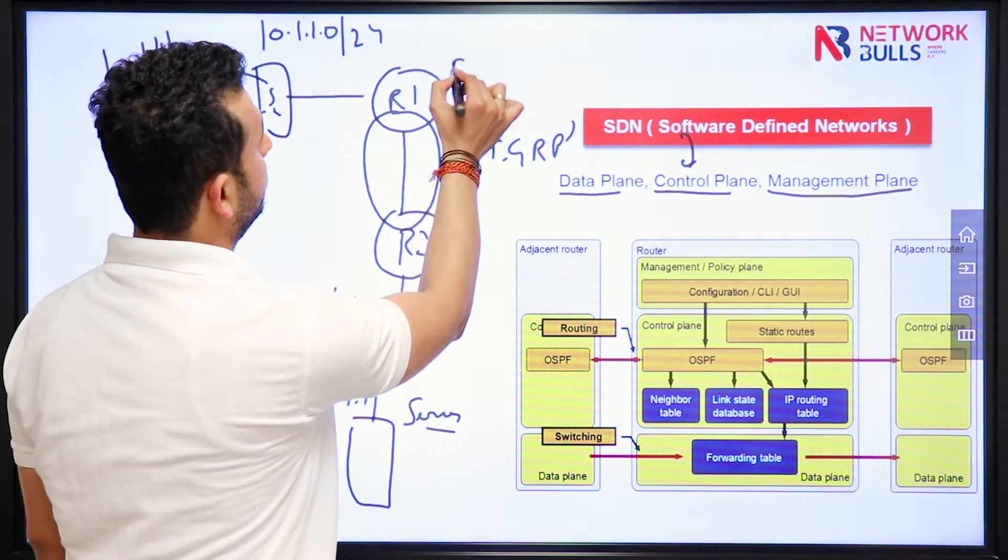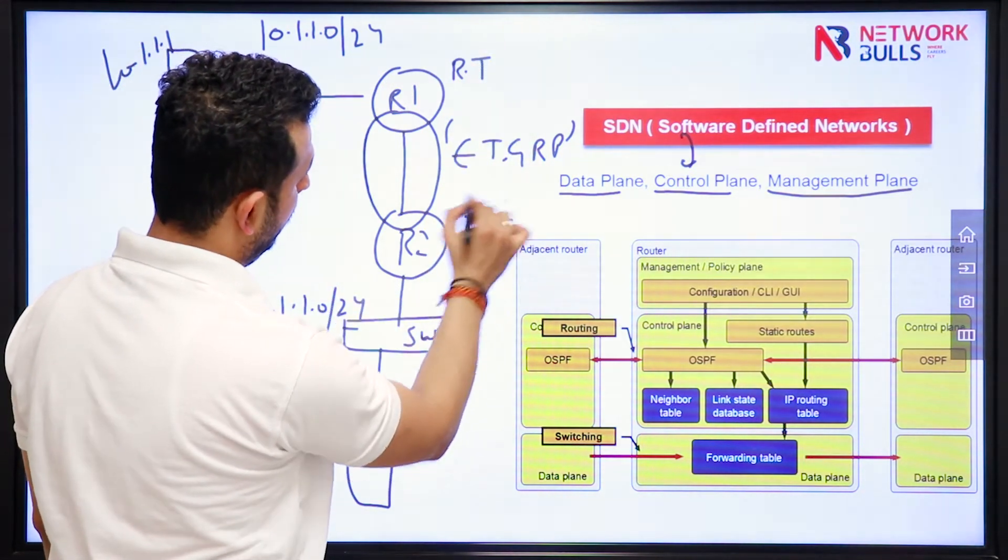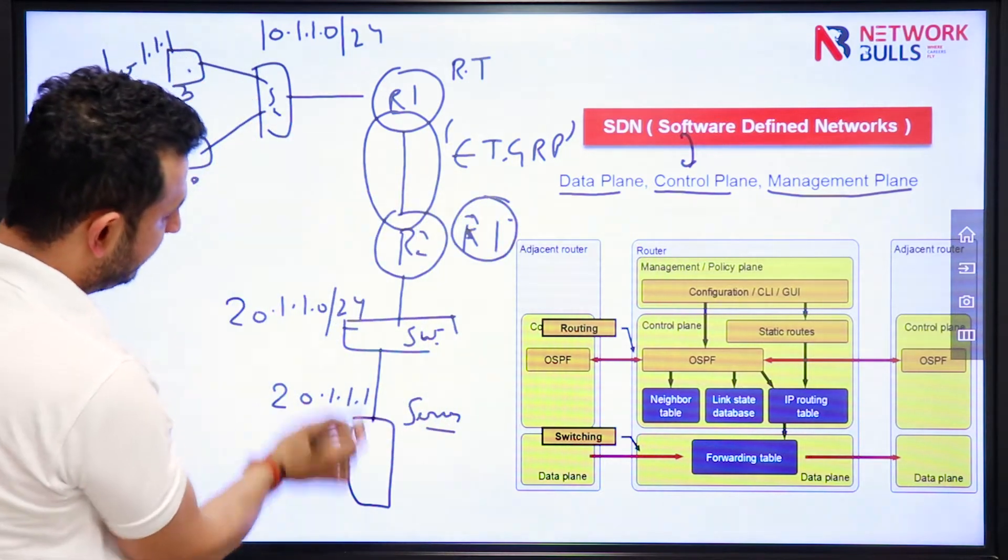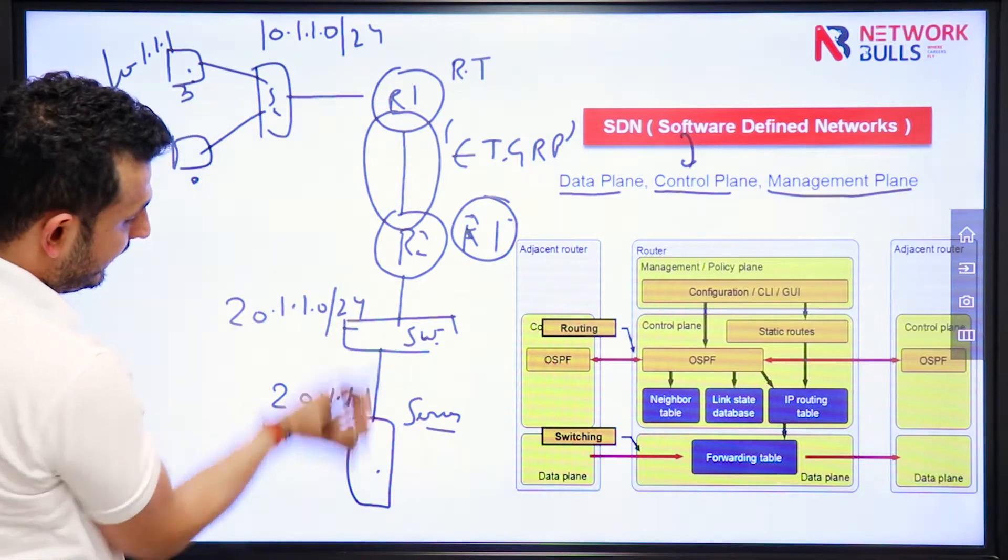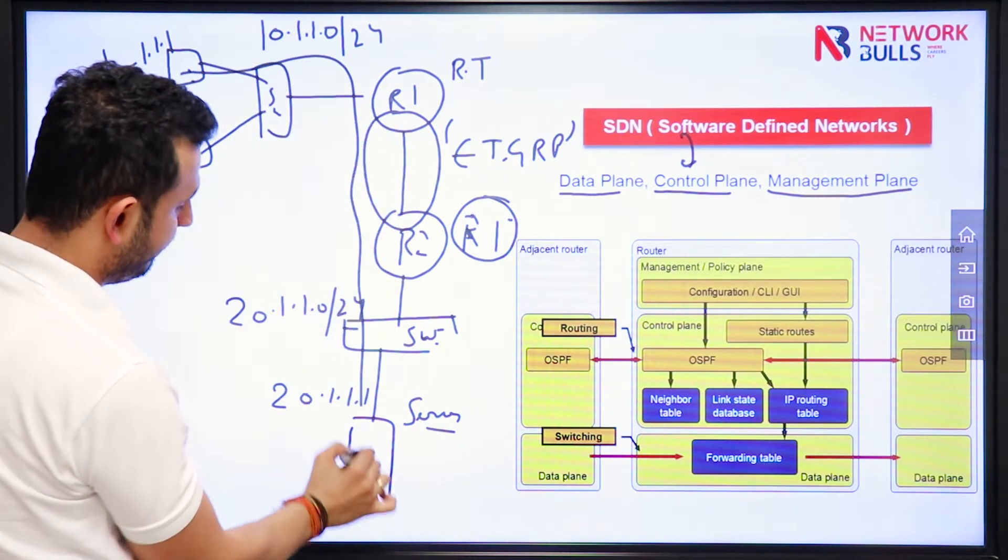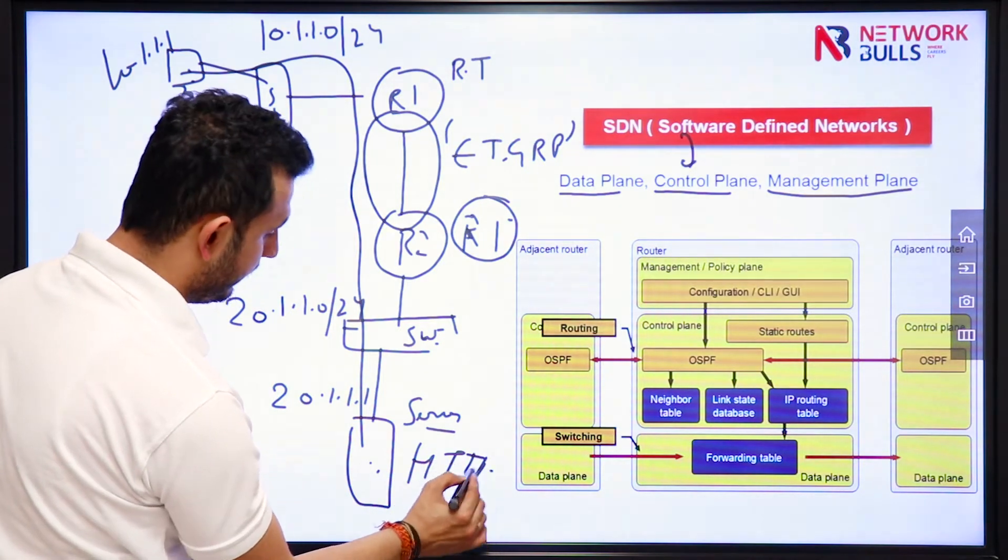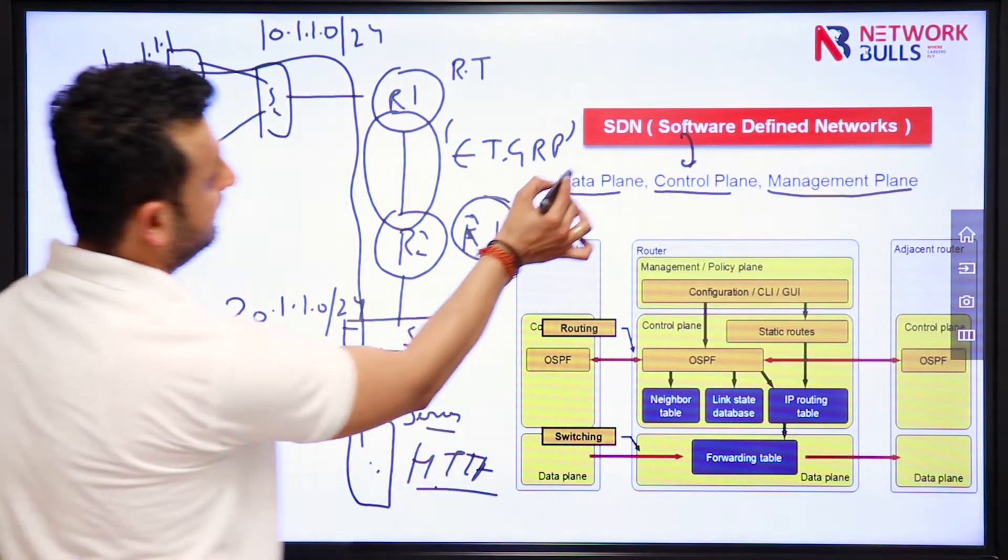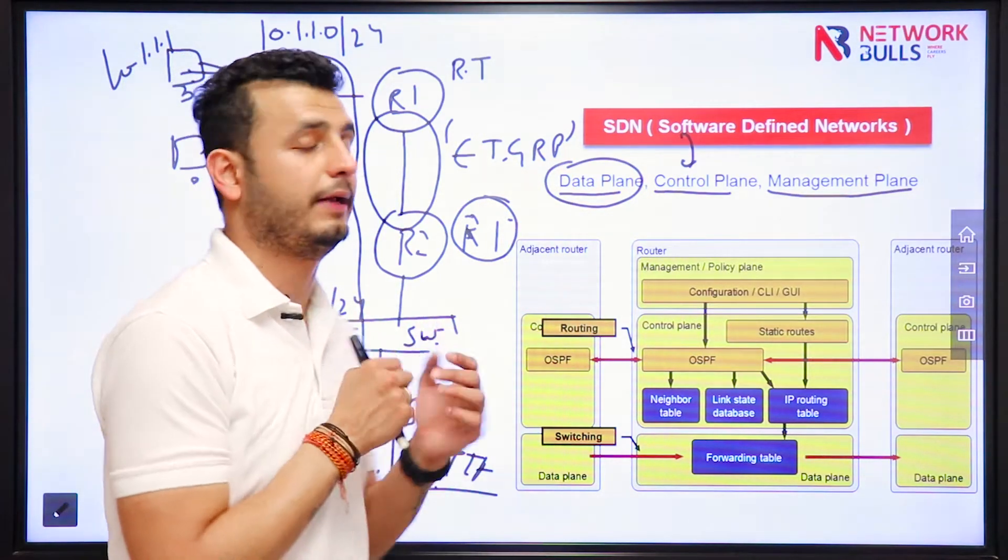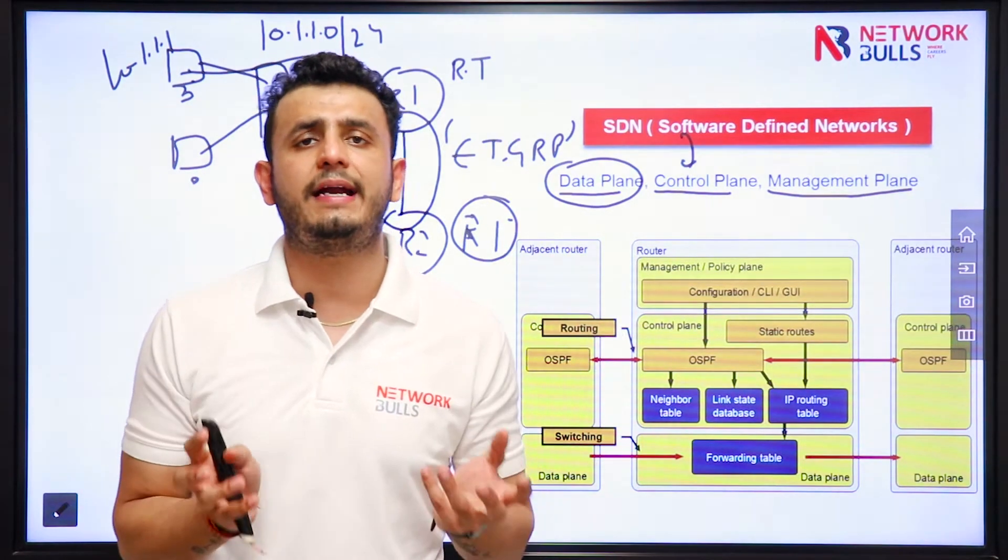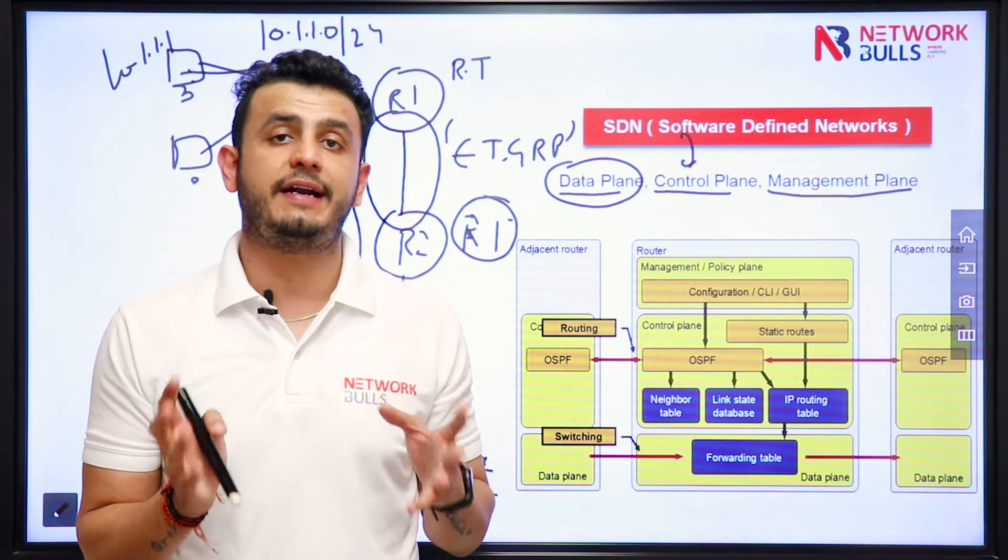Once routing table is built, now these users can communicate with the server. So when user is communicating with the server, this particular traffic, for example, this is my HTTP server. HTTP is basically your data plane and EIGRP in this case is your control plane. So control plane traffic is used to build forwarding tables for data plane traffic.